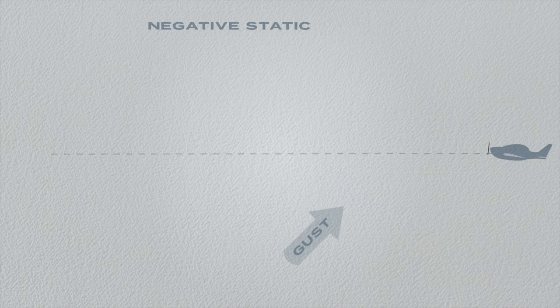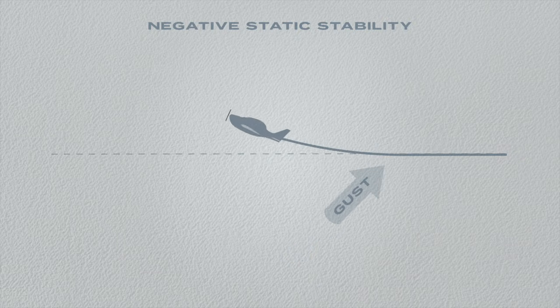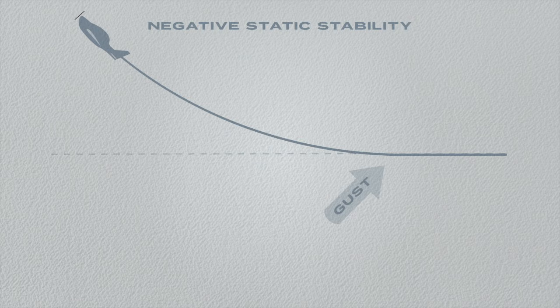Negative static stability is the initial tendency of the aeroplane to move further and further away from its original attitude. This is not desirable, so most aeroplanes are not designed this way.